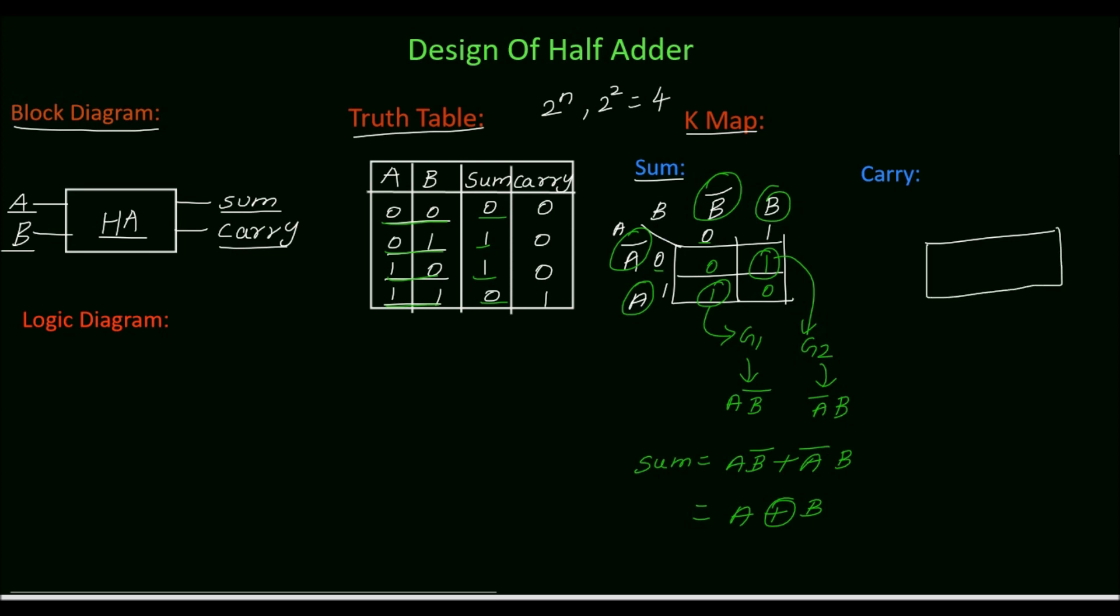Next we will write the K-map for carry. For carry also we need 4 cells. The inputs are A and B. So combination is 0, 1, 0, 1. Represent 0 as A complement and 1 as A, and 0 B complement, here B. Now we will fill the cells.